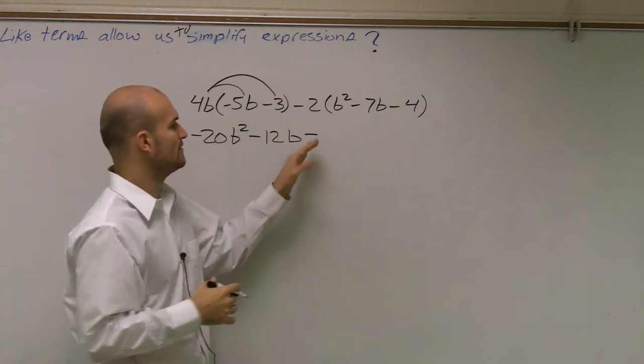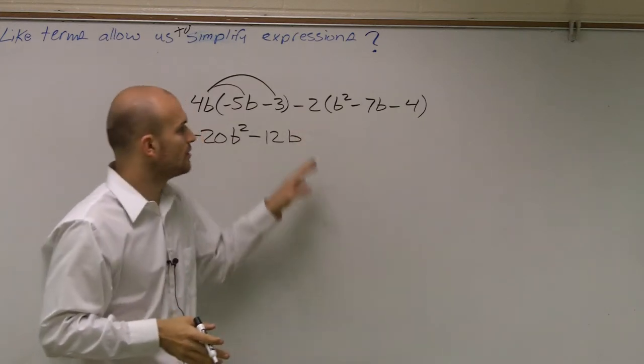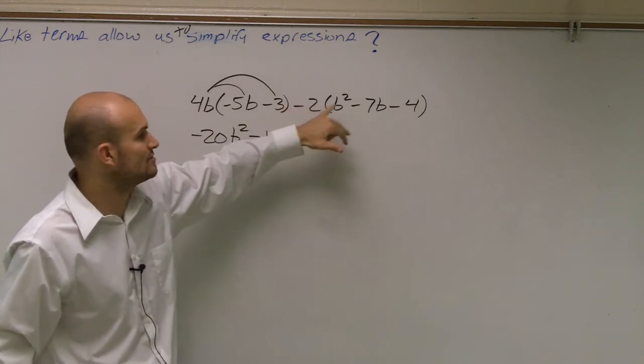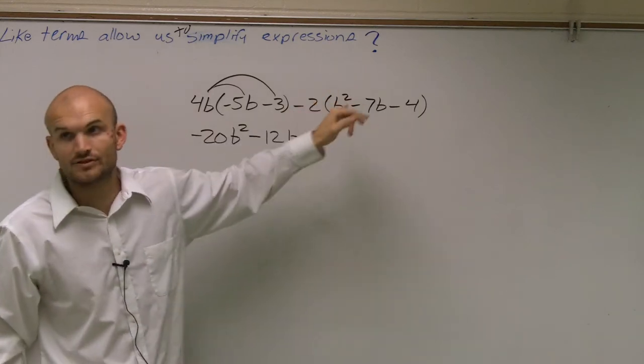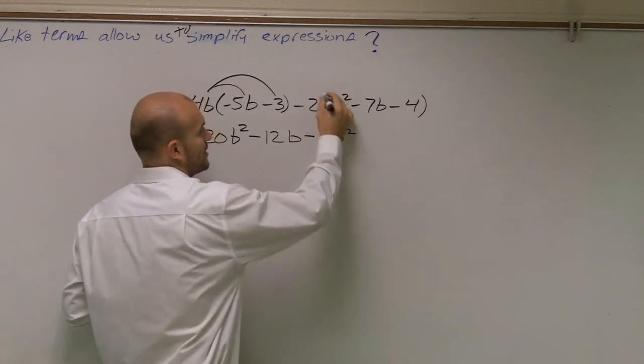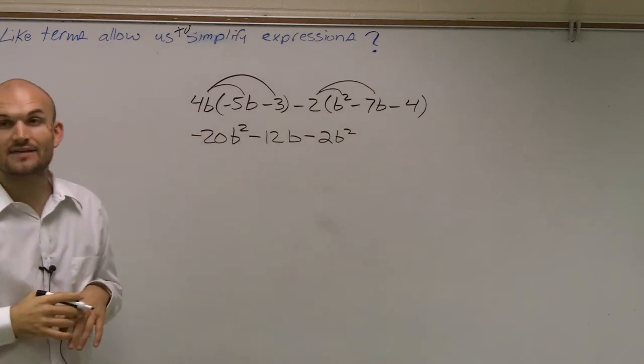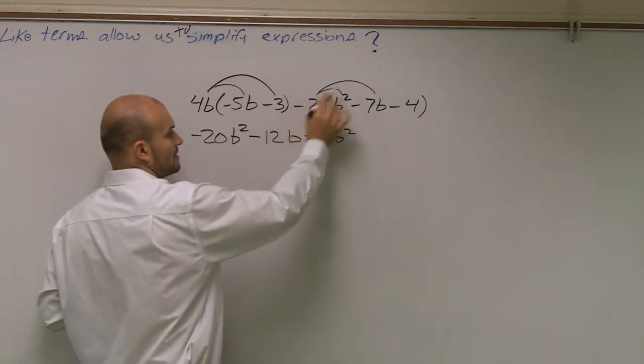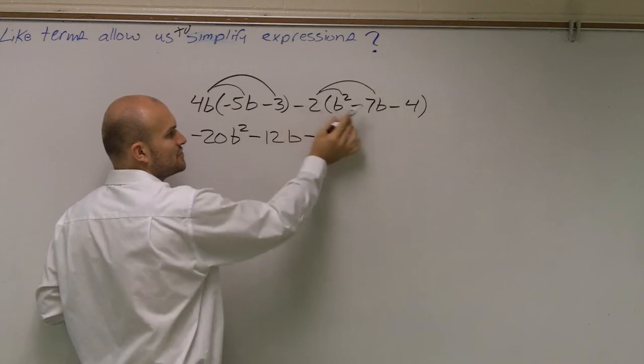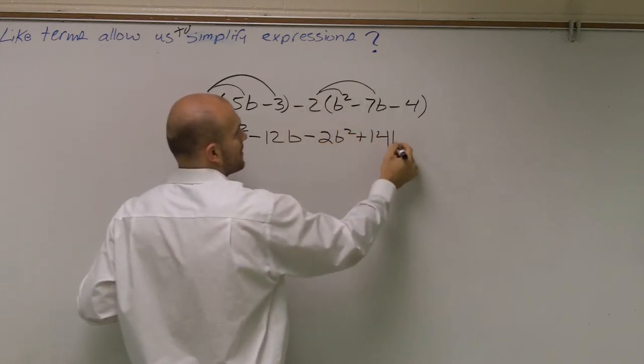Well actually, before I even do that, before we determine if it's minus or negative, what you want to look at, Markel, is just notice, do I take a negative 2 times b squared? Well, negative 2 times b is just going to provide you a negative 2b squared. Then I do a negative 2 times negative 7b. Negative 2 times negative 7b is a positive 14b.